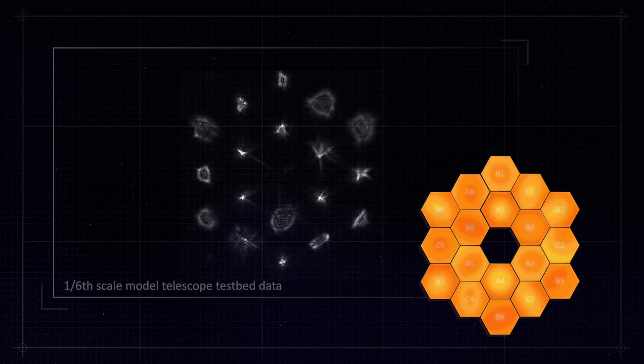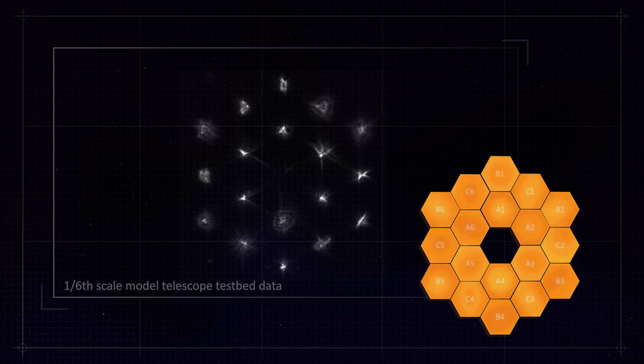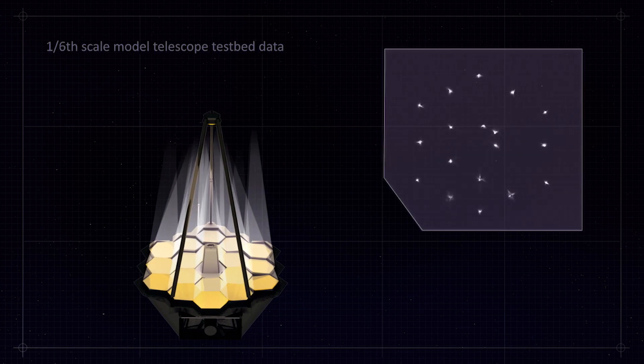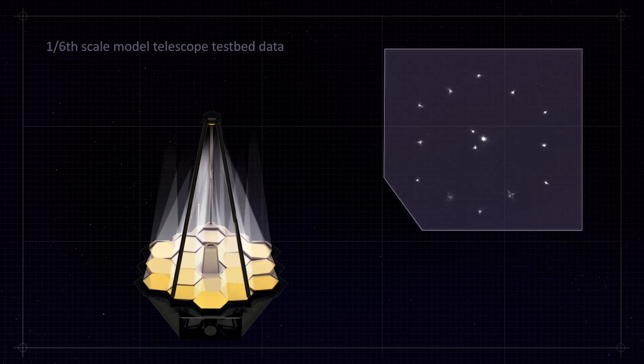And that's sort of the last step before we take those 18 spots and put them on top of each other to start forming a single star going through the 18 separate telescopes. That's the work that we'll be starting soon.